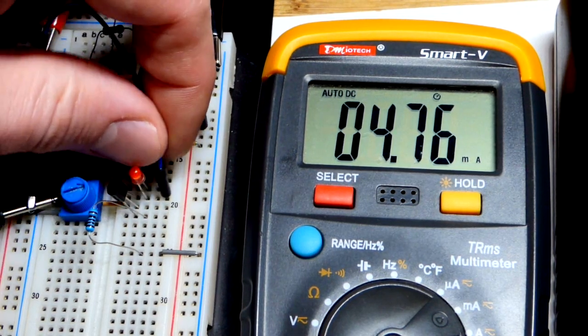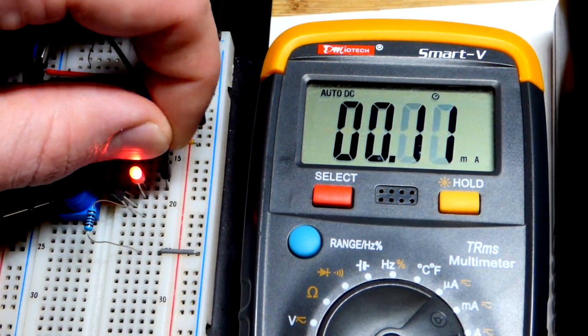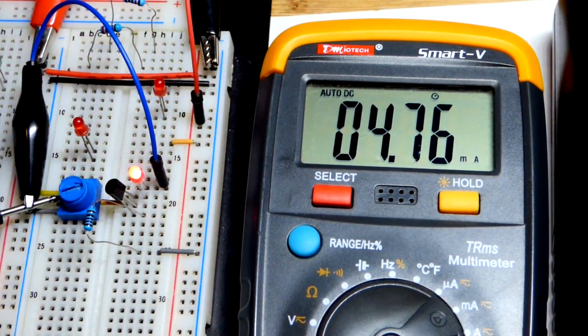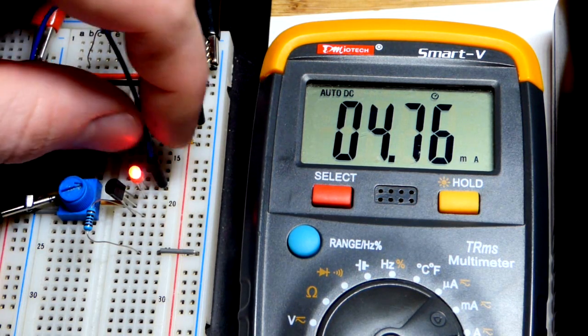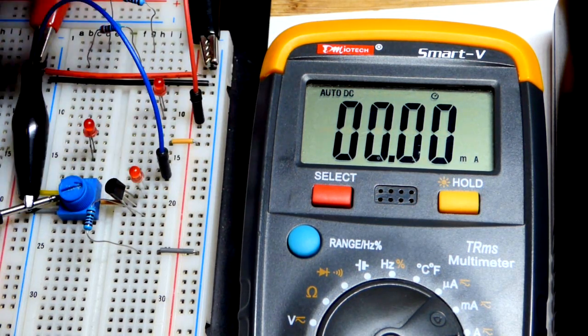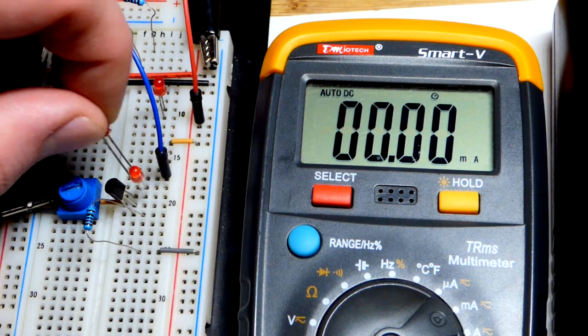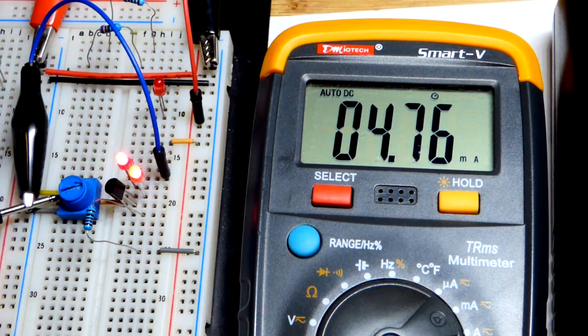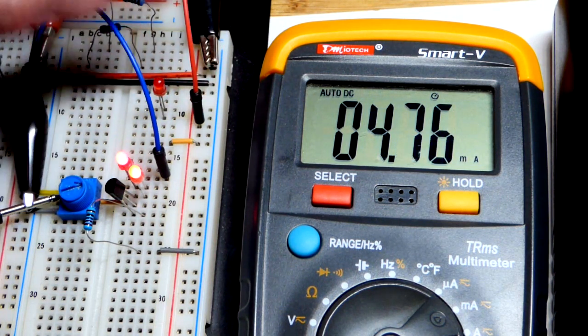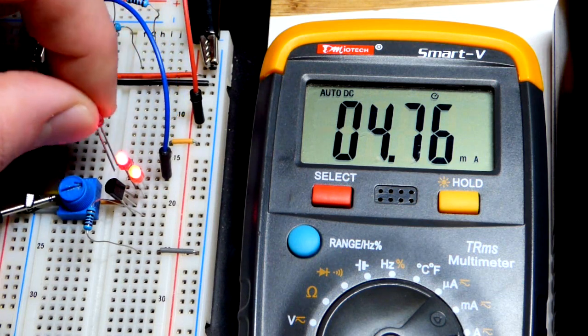There we go. 4.76. It's not lighting the diode because I'm down one row. I'll go up one row so that the LED is included. There we go. We got the current. Let's go up one more. Add another LED. And there you can see, 4.67.